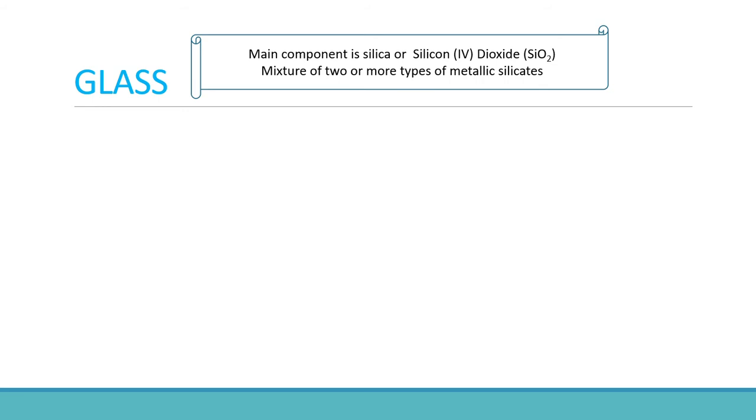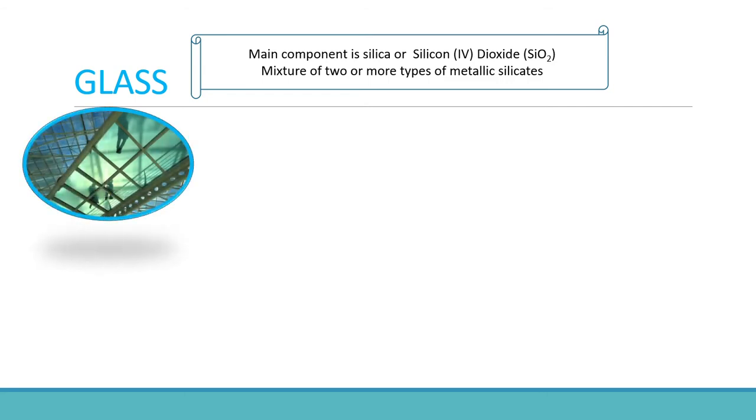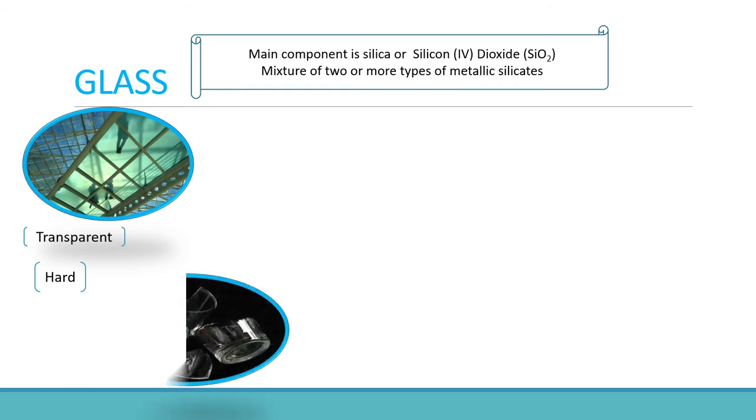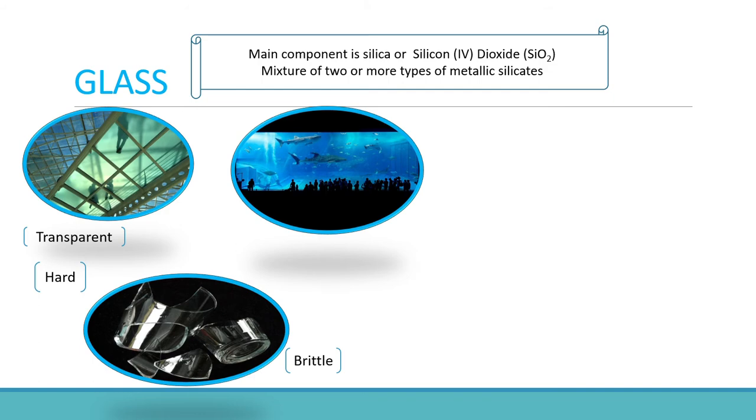Before we learn about types of glasses available, let's have a look at the common characteristics of glass. Glasses are transparent and hard material; however, they are brittle. Most importantly, glasses are non-porous, which means glasses are not permeable to liquid or gas.